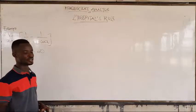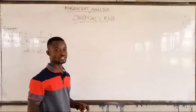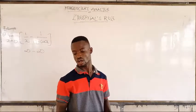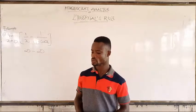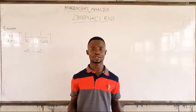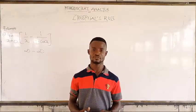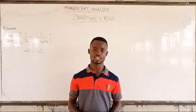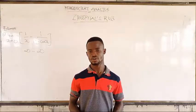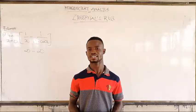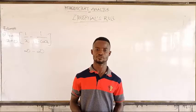So what do we do in order to get infinity over infinity or 0 over 0, which is the indeterminate form?